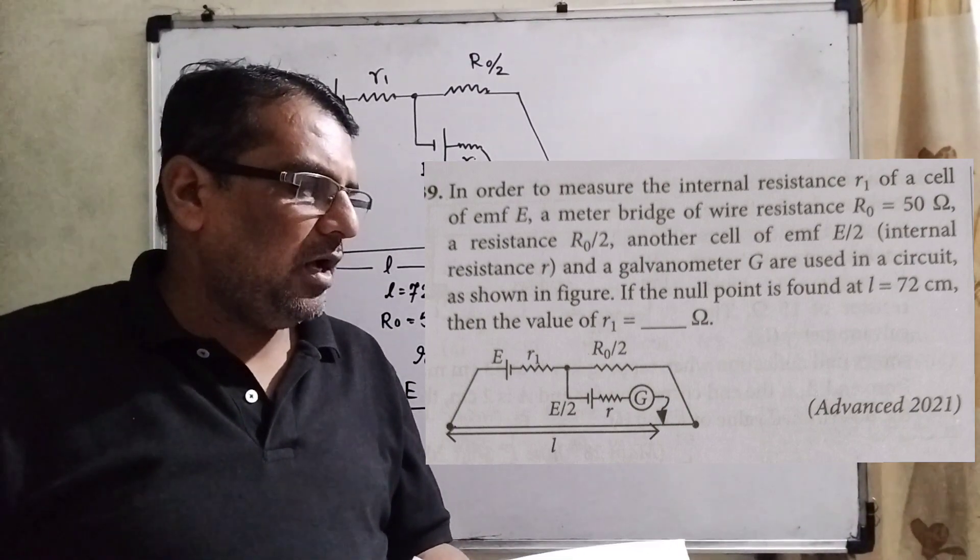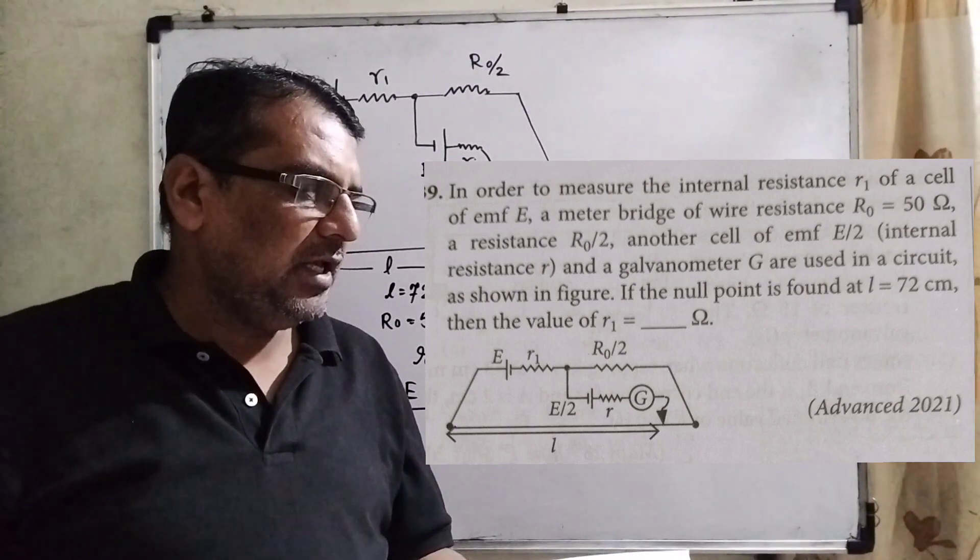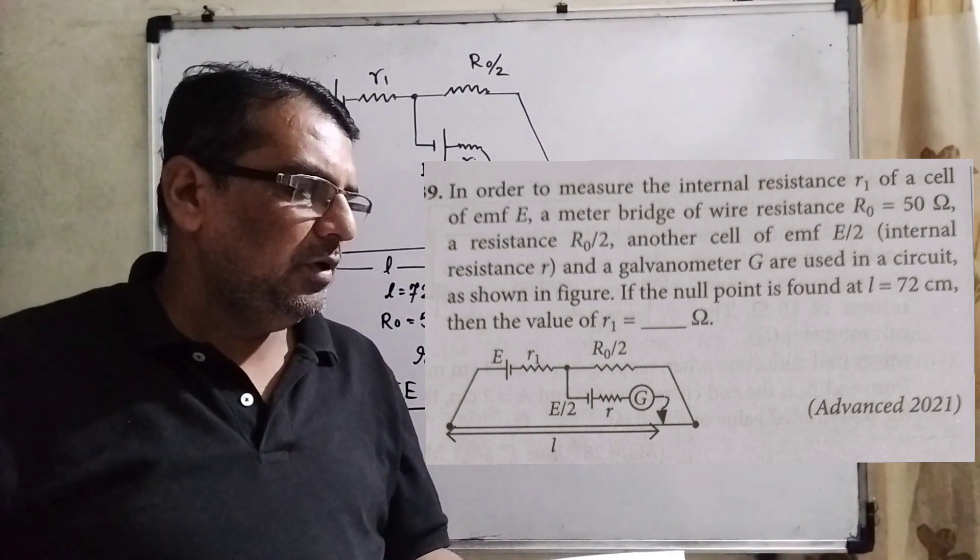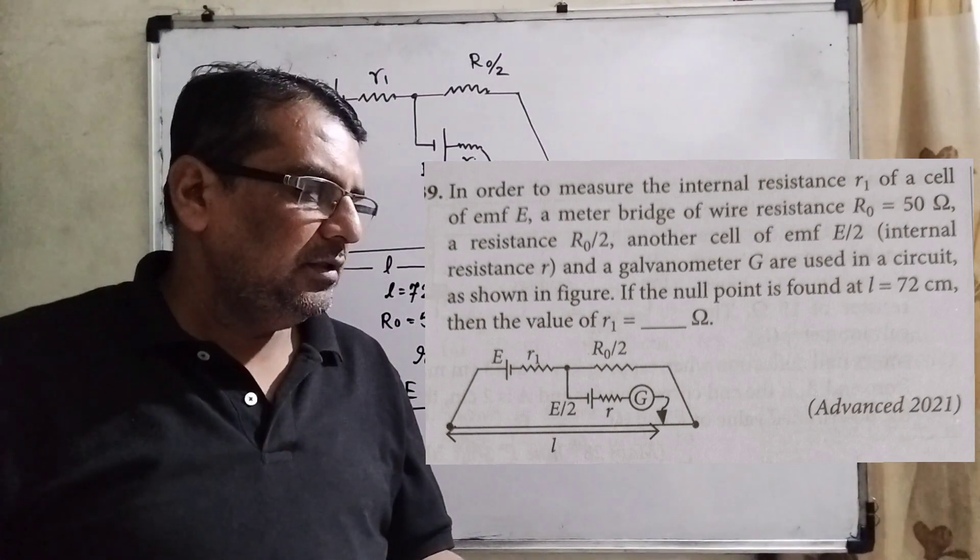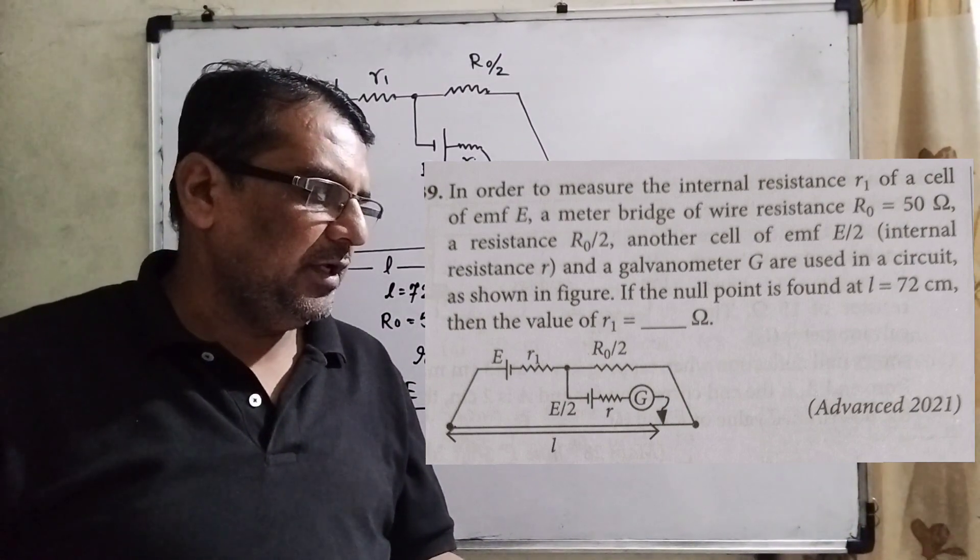A resistance R0 by 2, another cell of EMF E by 2 with internal resistance small r, and a galvanometer G are used in the circuit.